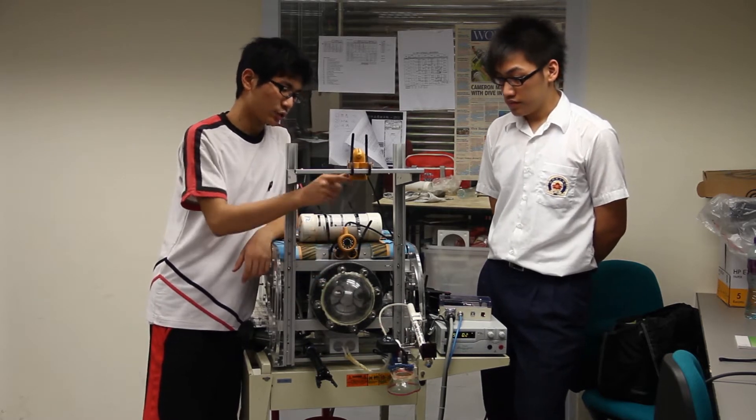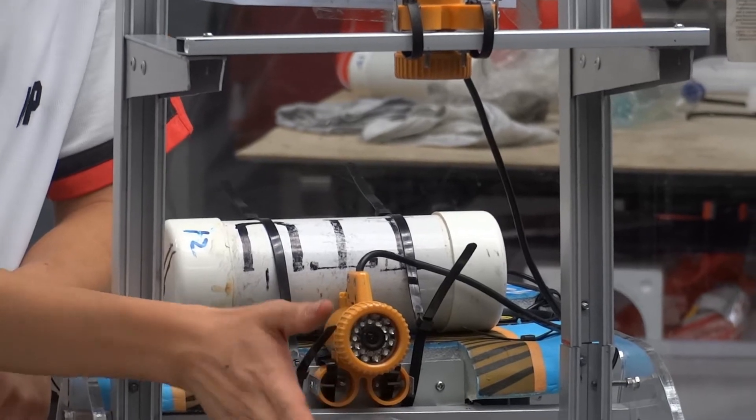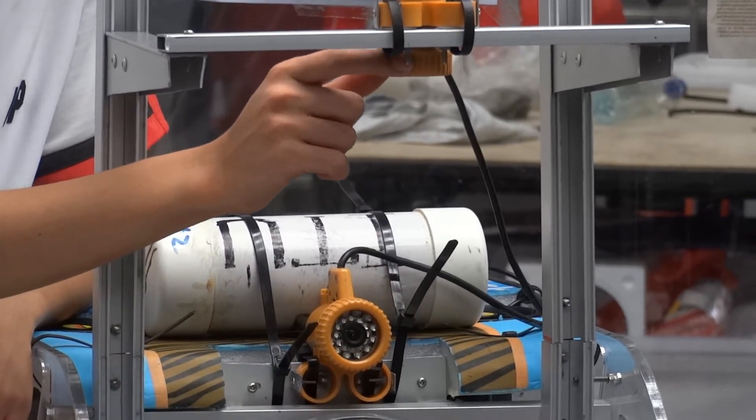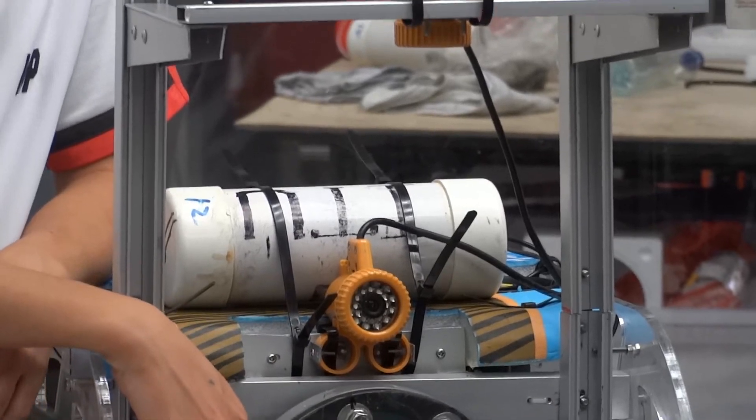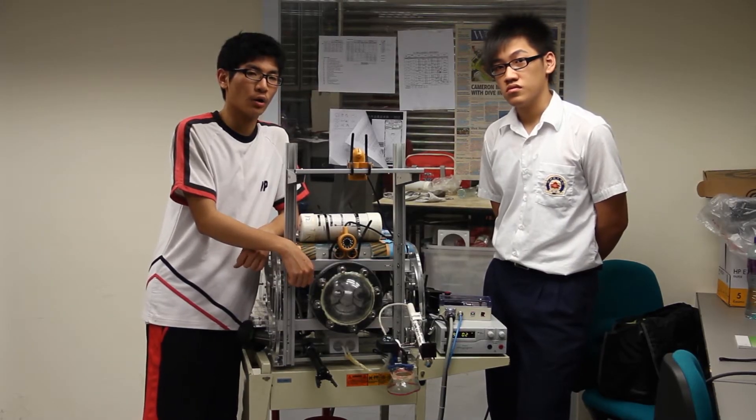Here are the two cameras. This one is for the forward eyesight. And this one is for looking at all the devices of our ROV. Then Kip will tell you more about the electronics of our ROV.